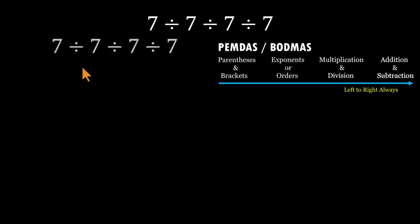So we start at the far left. 7 divided by 7 equals 1. Now we're left with 1 divided by 7 divided by 7.